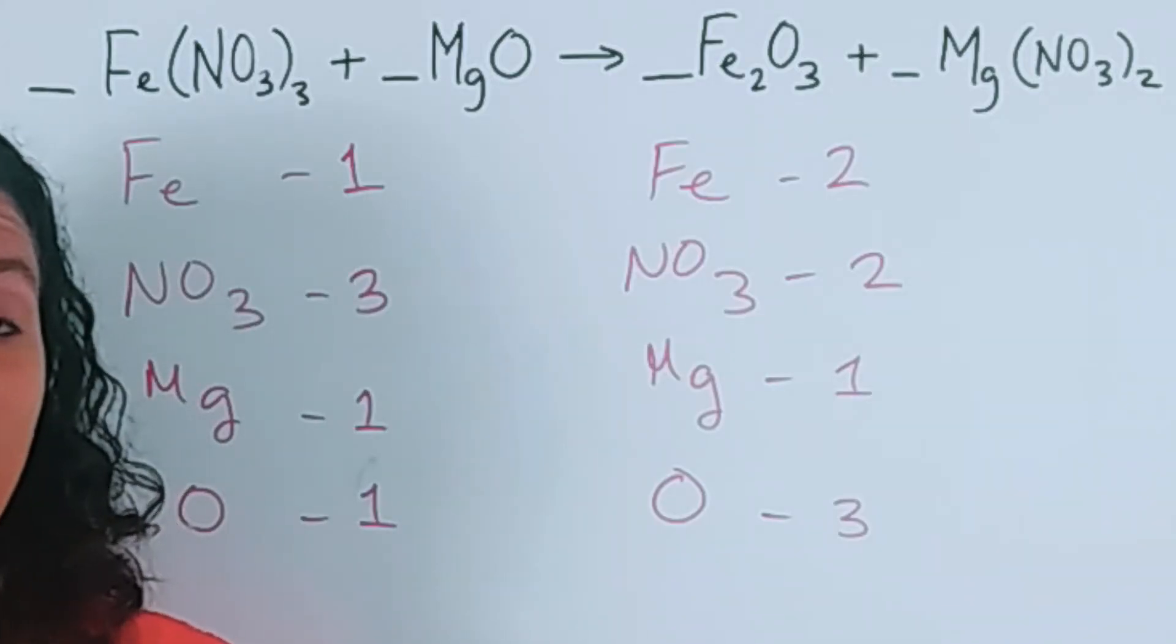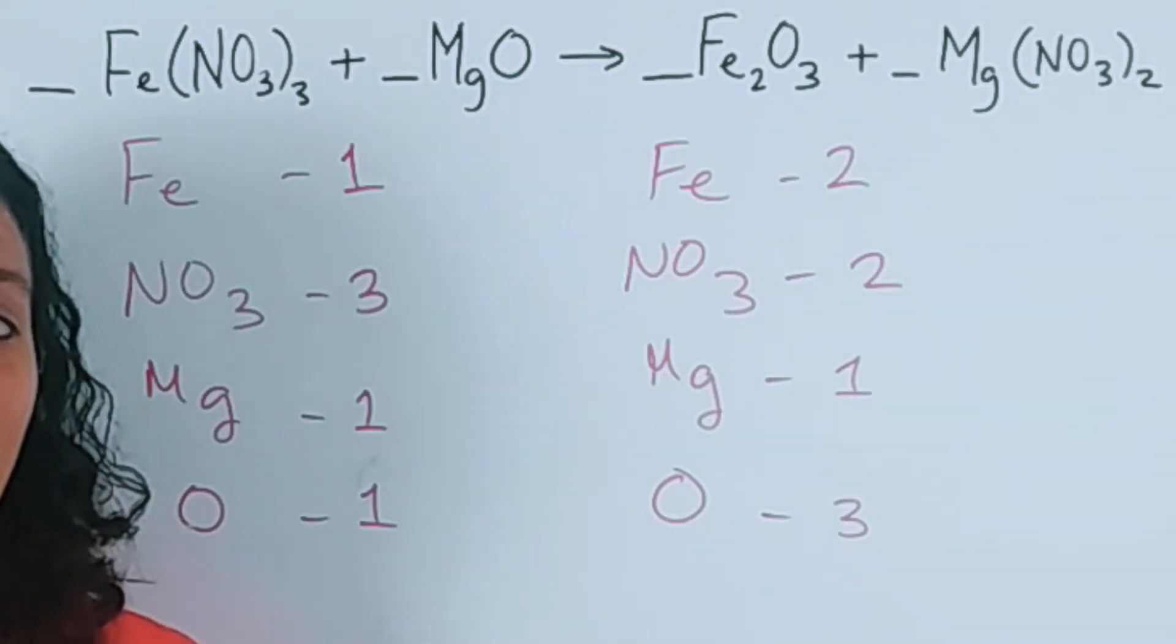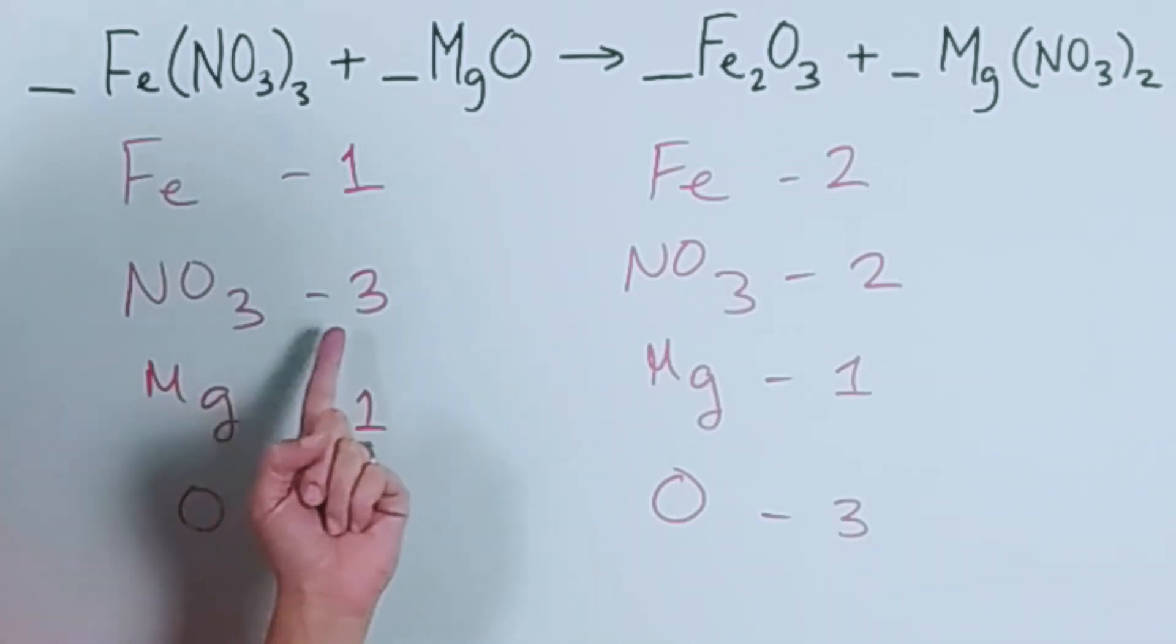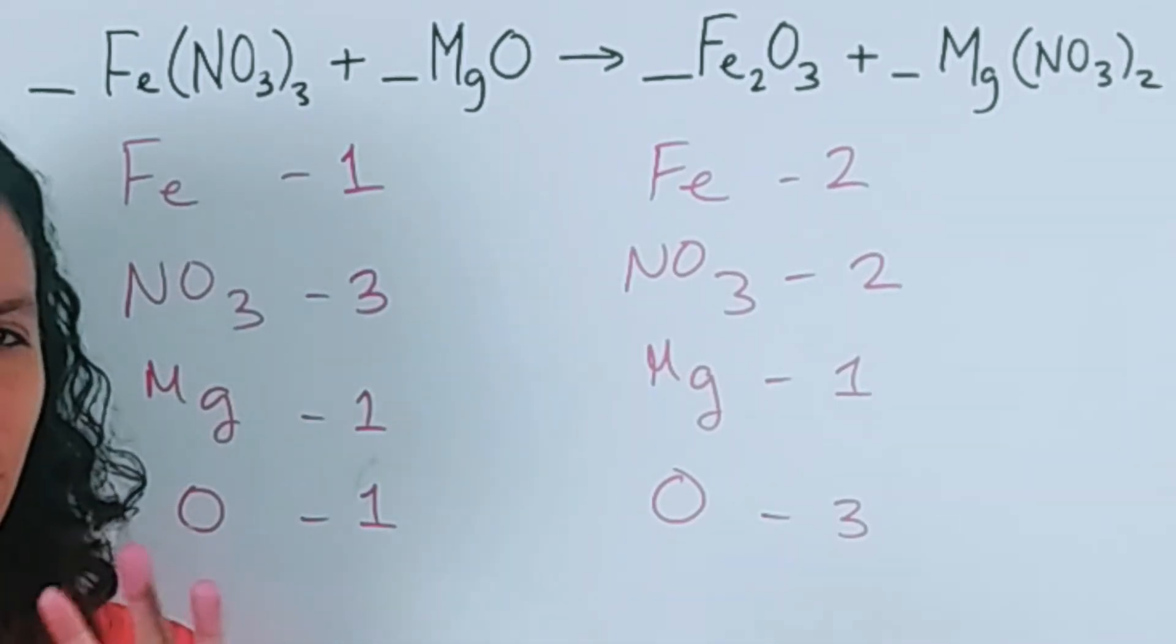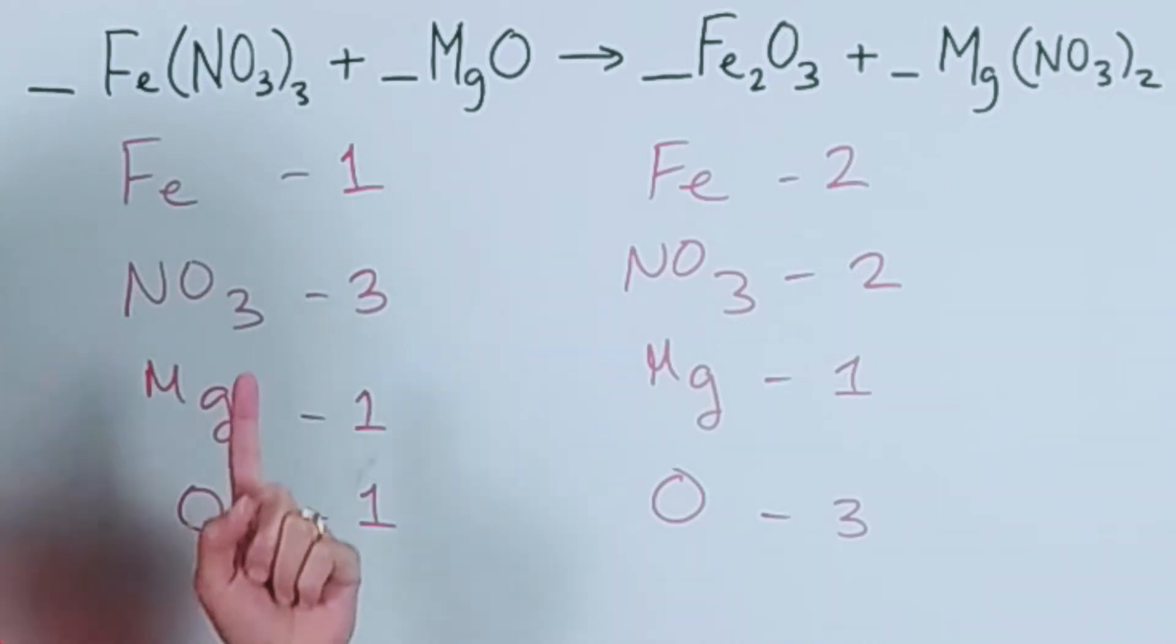Now I mentioned in the previous video that the first thing we're going to do is start with the largest number. And in this case, we have nitrate and we have oxygen. They're both three. But if we notice, we have three nitrates here and two nitrates here.